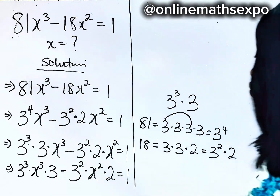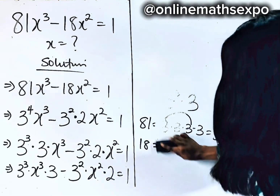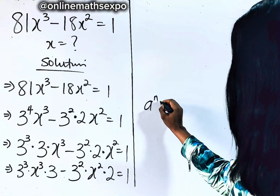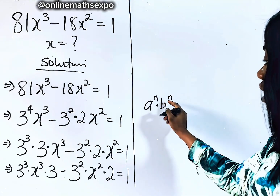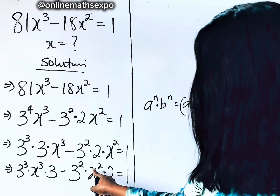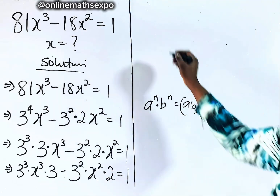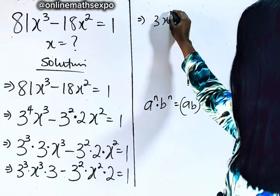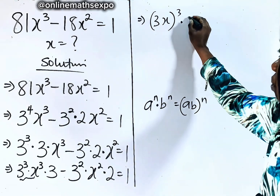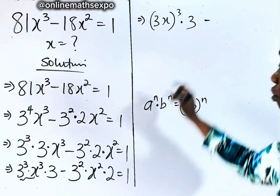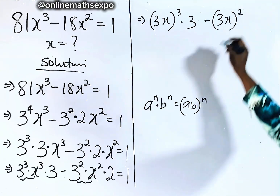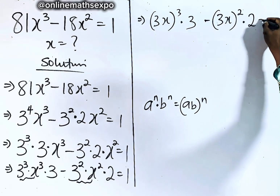Just remember that for every a to the power of n multiplied by b to the power of n — where the powers are the same — it gives you ab raised to power n. You observe that these two powers are the same and these two are also the same. So it's just going to give us 3x raised to the power of 3, multiplied by 3, minus 3x raised to the power of 2, multiplied by 2, is equal to 1.